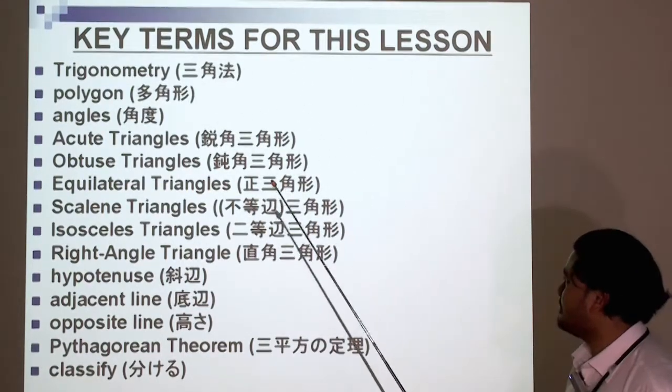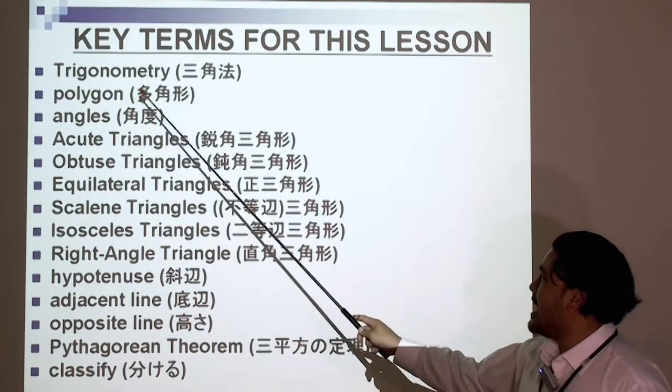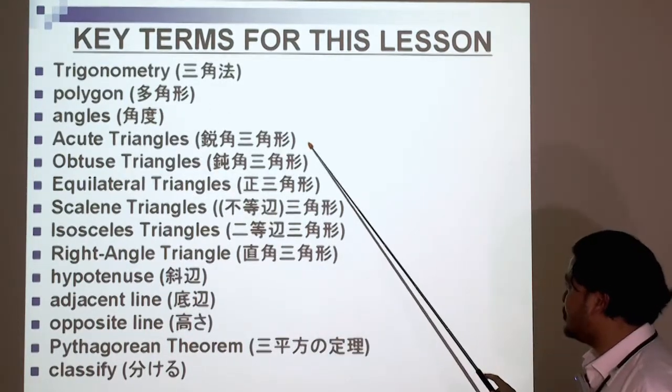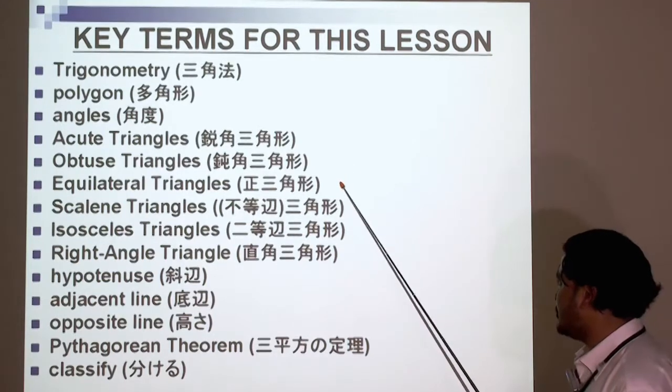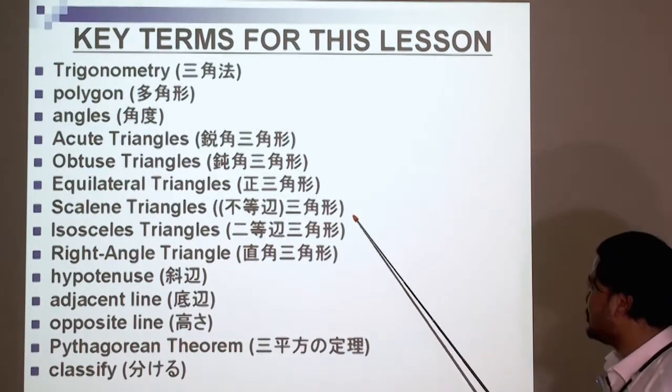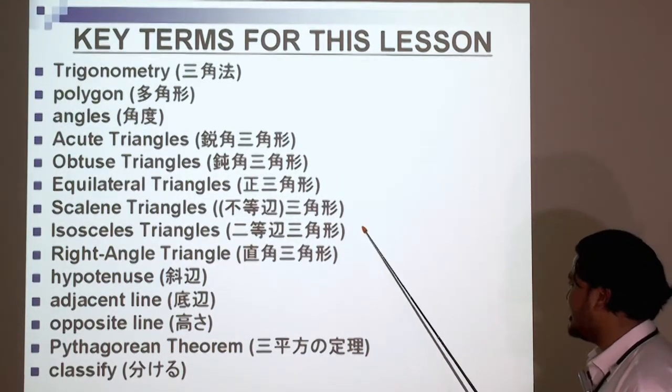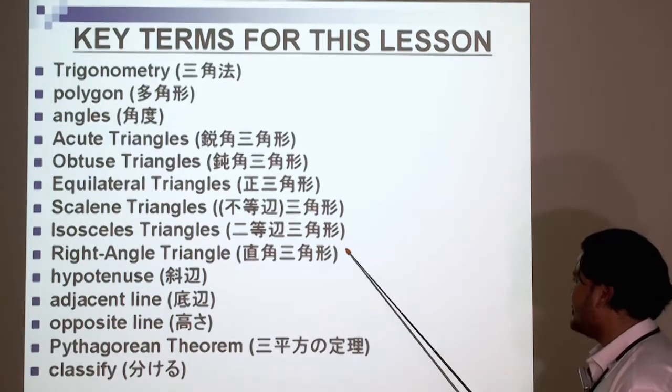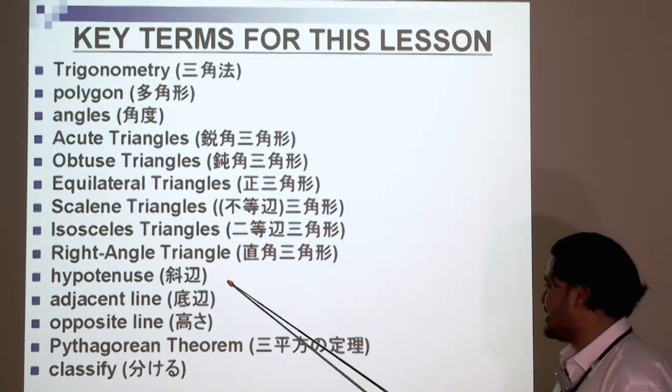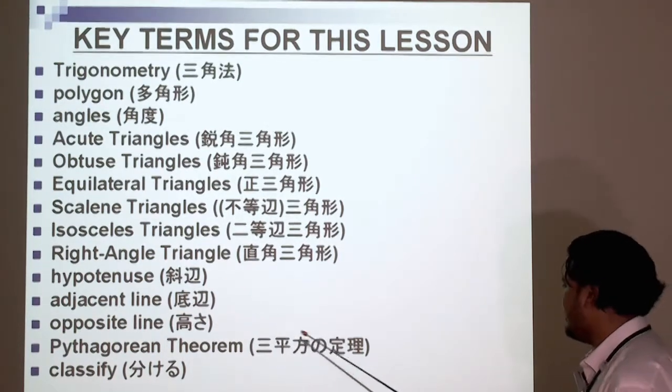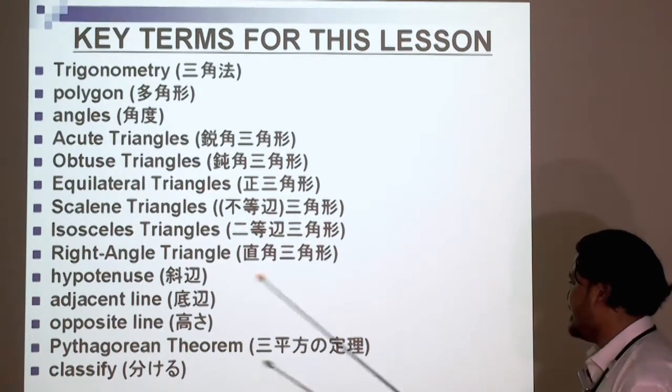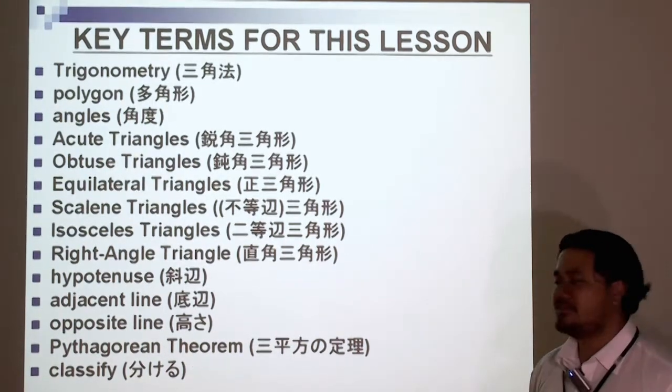Trigonometry, a polygon, angles, acute triangles, obtuse triangles, equilateral triangles, scalene triangles, isosceles triangles, right angle triangles, the hypotenuse, the adjacent line, the opposite line. We're going to talk a little bit about Pythagoras' theorem or the Pythagorean theorem and classify. What does it mean to classify?